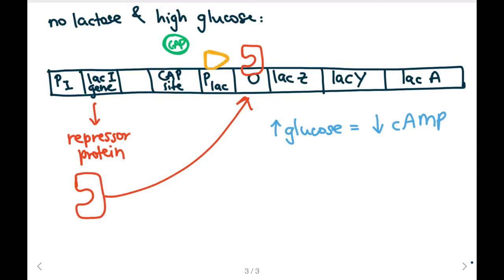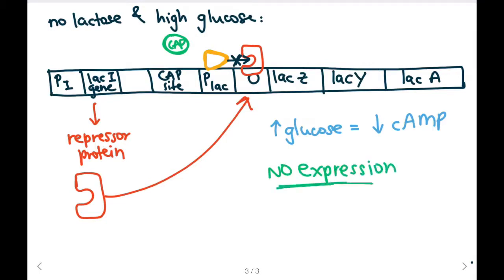RNA polymerase will still bind to the promoter of our LAC operon, but it will be unable to move forward because the repressor protein is blocking it. So we're going to have no transcription, which means no expression of our LAC operon.